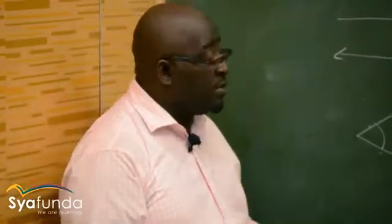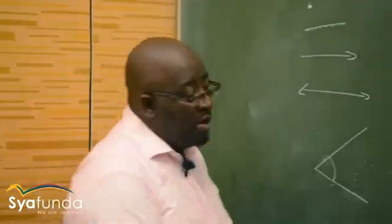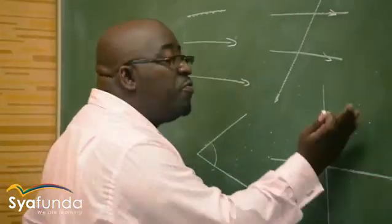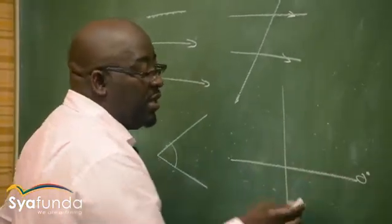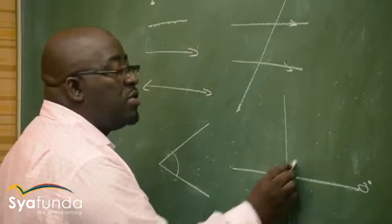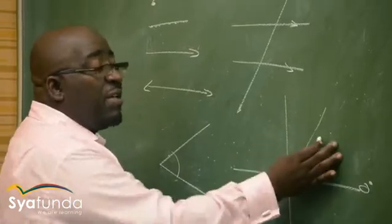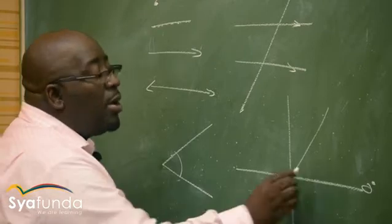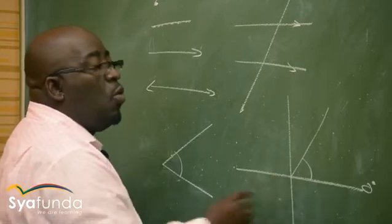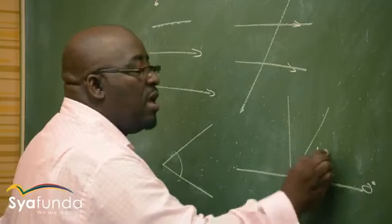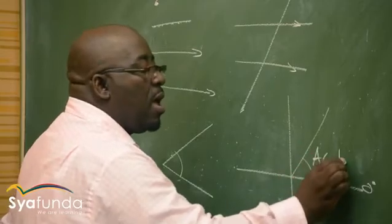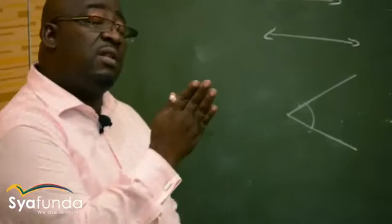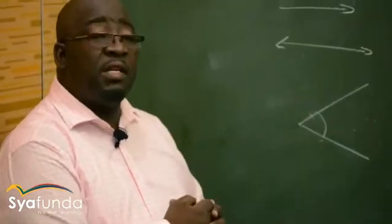Angles are measured in degrees. Starting from zero degrees where we have not moved at all, once we move into the first quadrant those angles are called acute angles. An acute angle is an angle that is greater than zero degrees but less than 90 degrees.